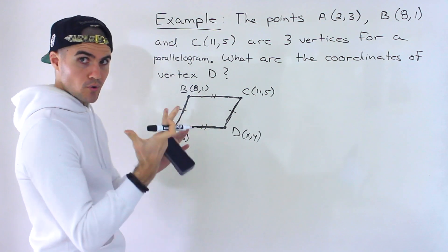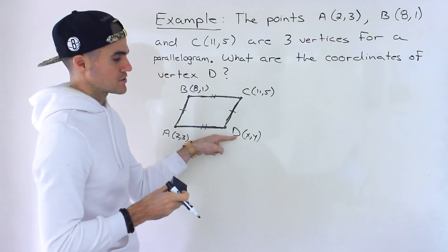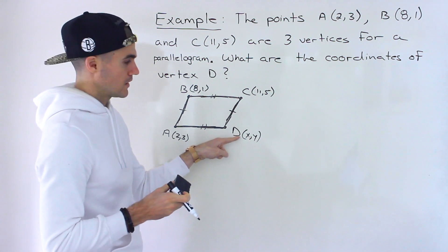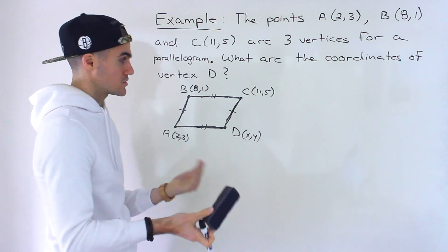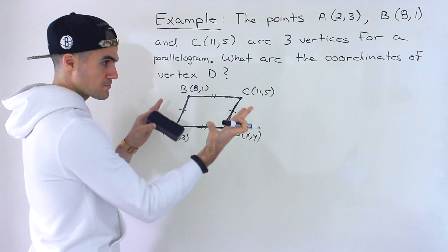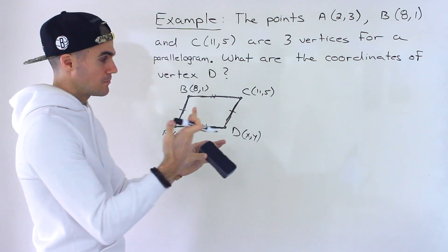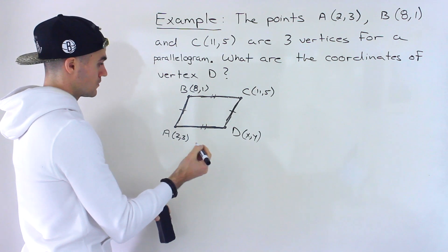And knowing those two properties, we can actually make two equations because notice we have two unknowns to solve for, X and Y. And usually when you have two unknowns, you got to make two equations, and then you could do substitution and elimination to solve for them. So we can use those pairs of slopes being parallel to make those two equations.